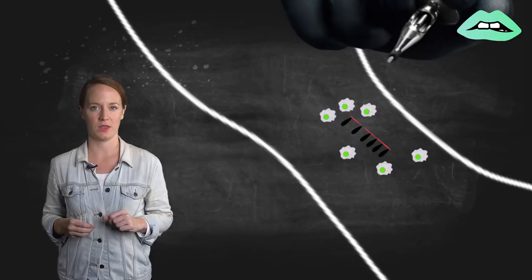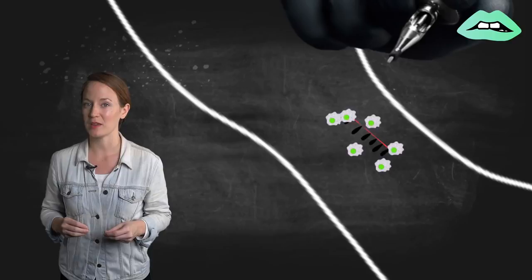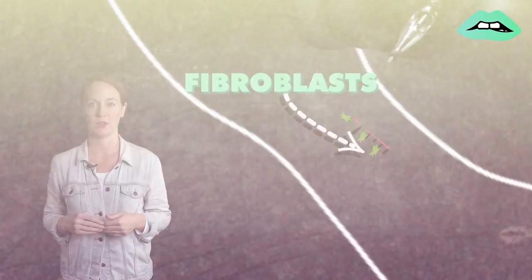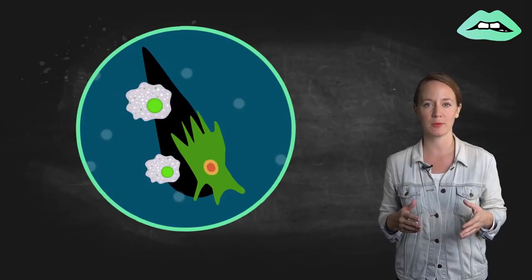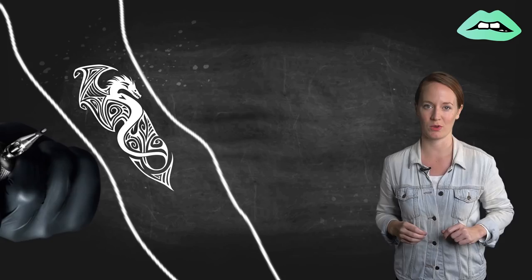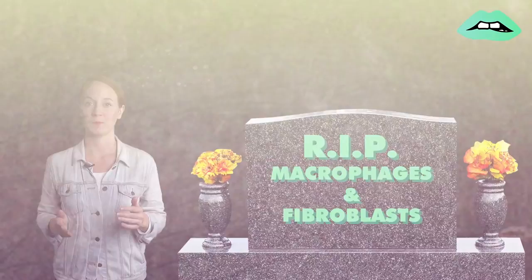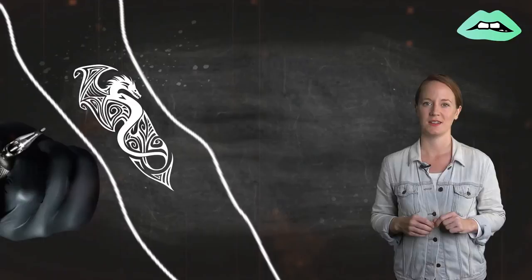So they try to get rid of it by eating it. Meanwhile, skin cells called fibroblasts begin to soak up the ink that the macrophages didn't get to. Some of those ink-filled macrophages and fibroblasts then get stuck in the dermis, which is actually what you're looking at when admiring a tattoo: the ink that's trapped inside the cells that attempted to destroy it. Kind of like a little cell graveyard.